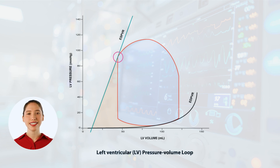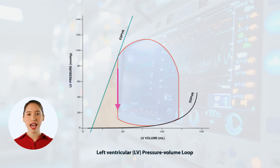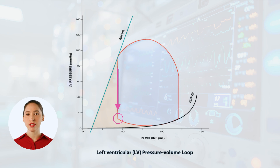And finally, the aortic valve closes and the heart relaxes, causing pressure to decrease, and the heart starts filling again during diastole. This forms our pressure-volume loop of the cardiac cycle.